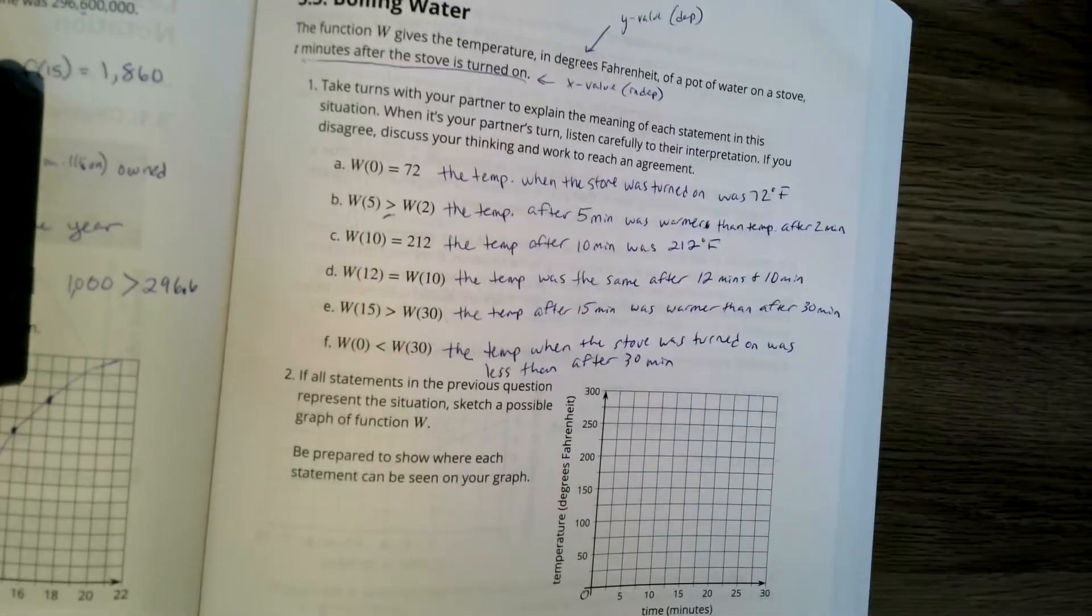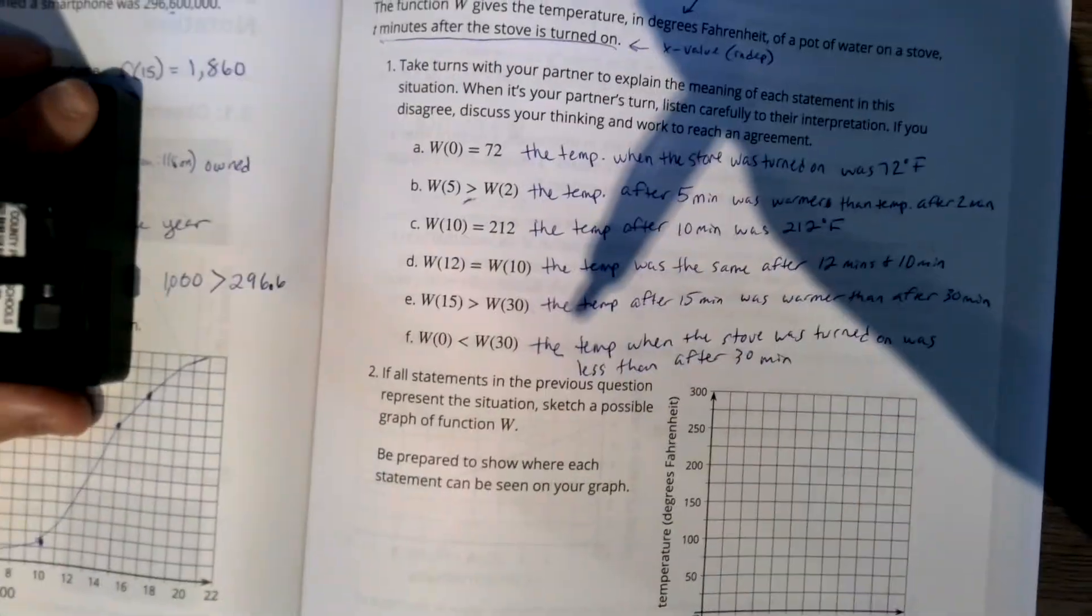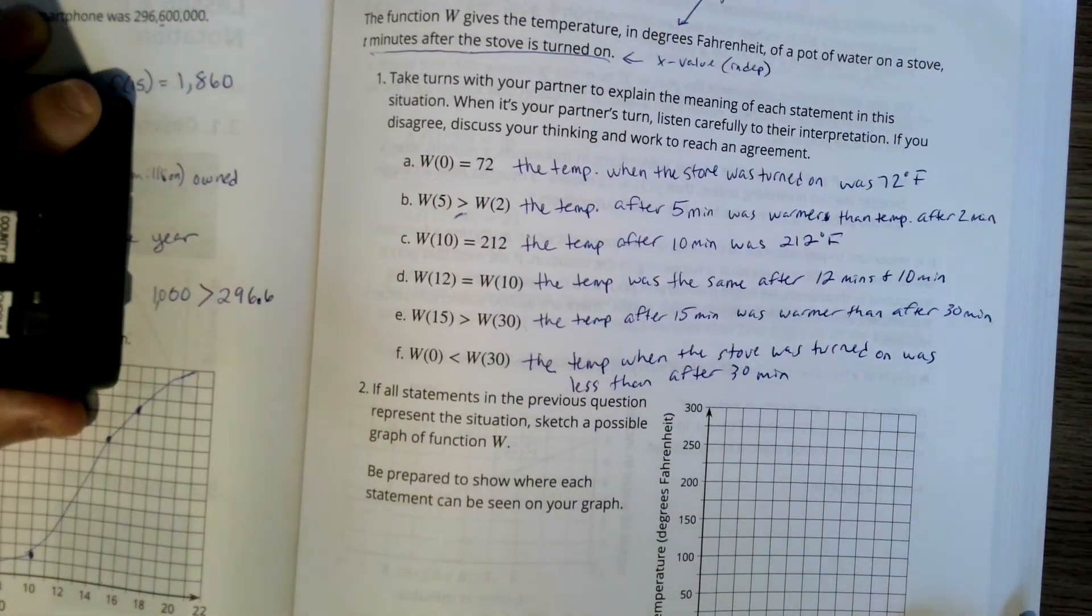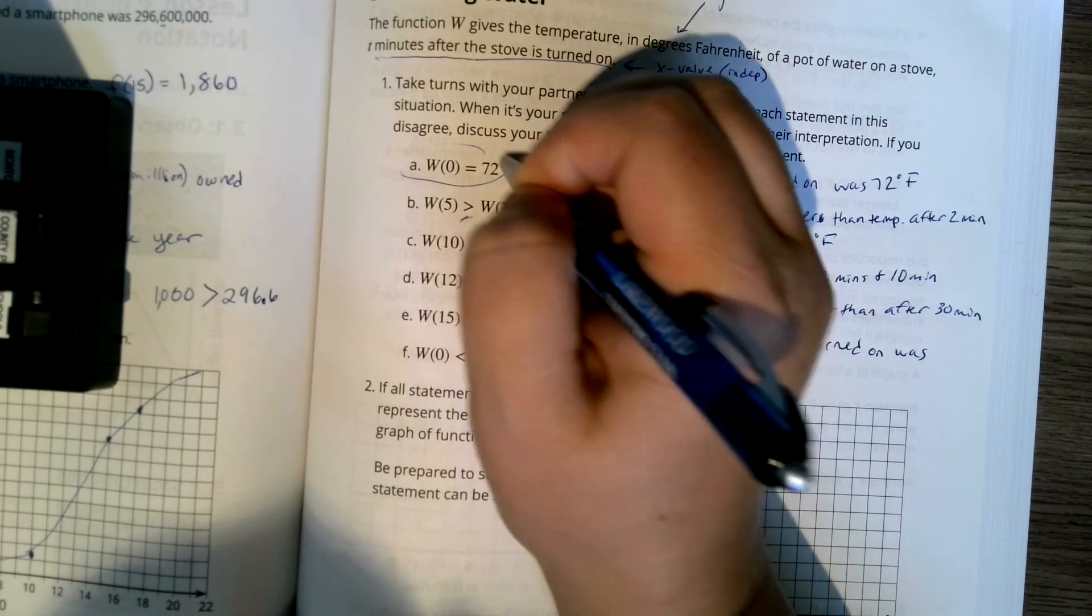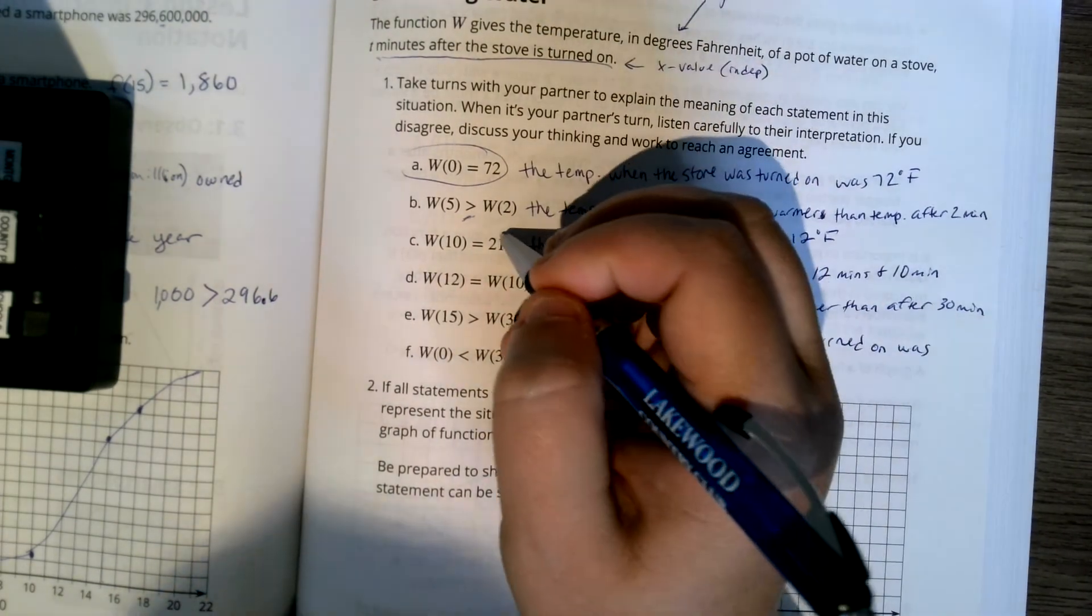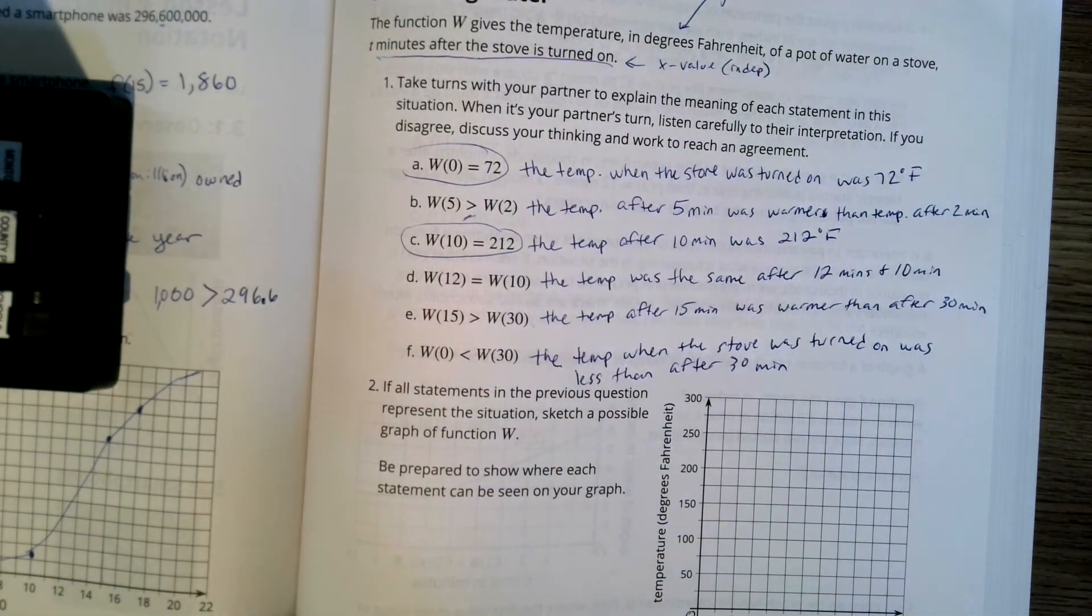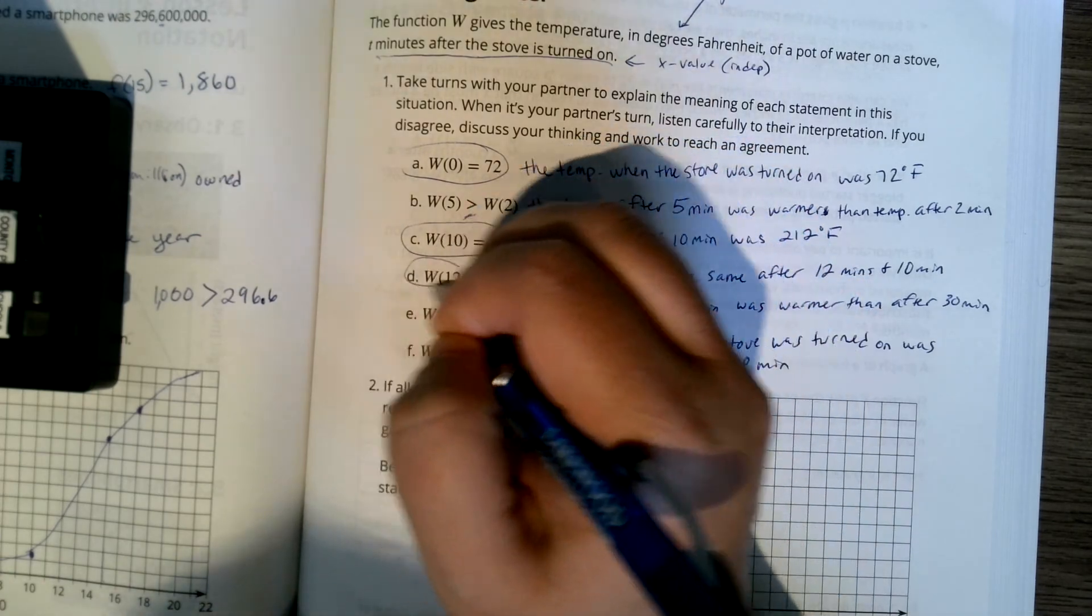It says if all the statements in the previous question represent the situation, sketch a possible graph of function W. Be prepared to show where each statement can be seen on the graph. Well, if we go back here, there's a couple points we definitely know of. If we know this point when x is 0, we know when x is 10, and we know when x is...